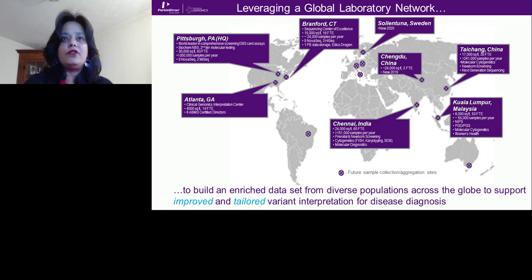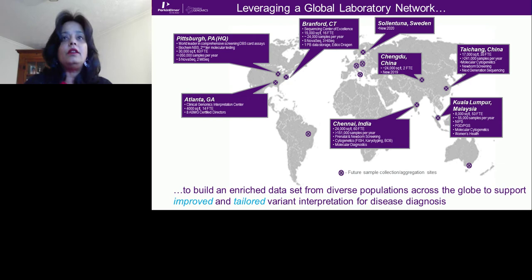Let me introduce myself. I am the head of cytogenomics for PerkinElmer Genomics. PerkinElmer Genomics has a global laboratory network with laboratories in India, Malaysia, China, Sweden, and two laboratories in the United States — one in Brantford and one in Pittsburgh.